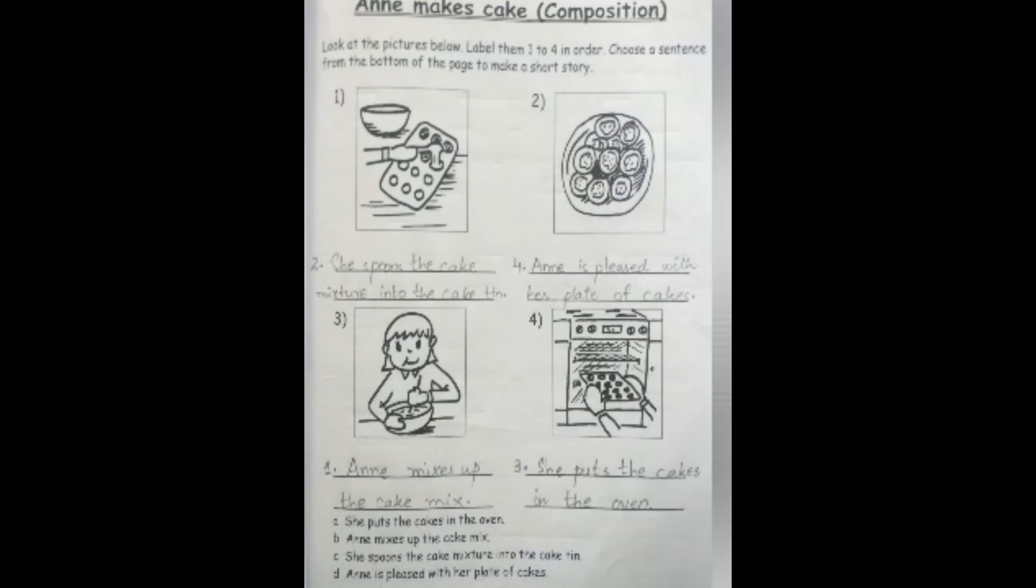Now here first you have to look at these pictures and then label them in the correct order. Now you have to see which step will be followed first, then the second step, what will be the third step and what will be the fourth step.